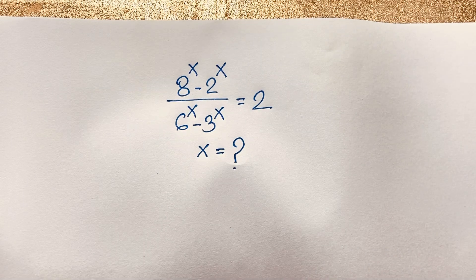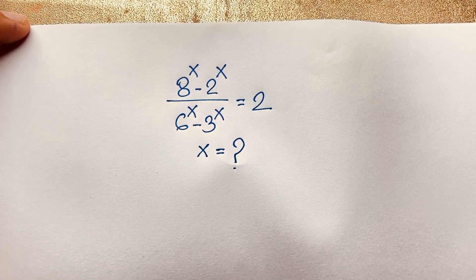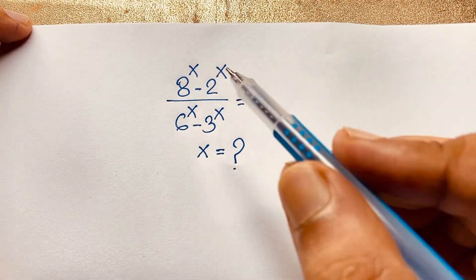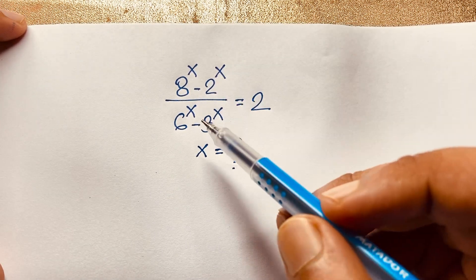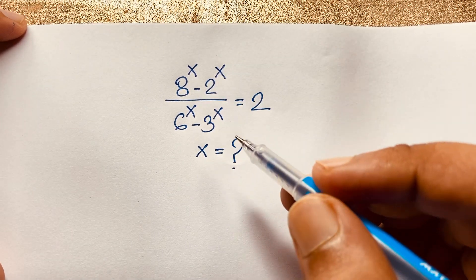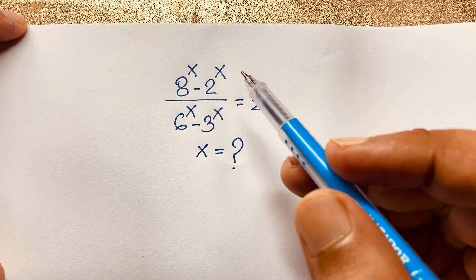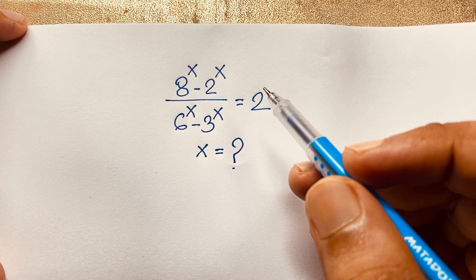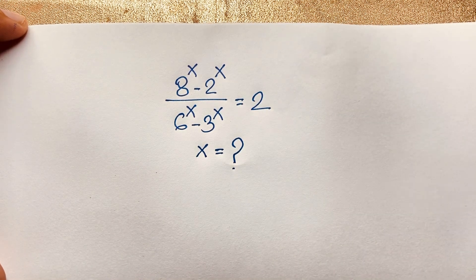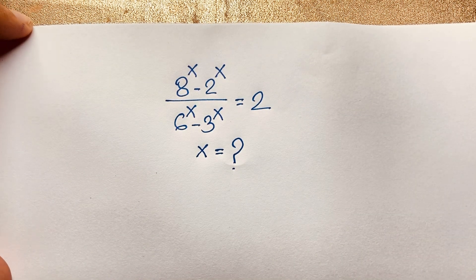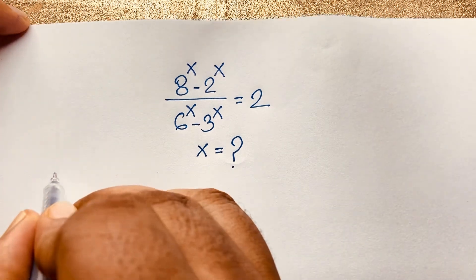Hello everyone, welcome to Russia's Classroom. Today we are solving an interesting math scenario question, which is: 8 to the power of x minus 2 to the power of x, over 6 to the power of x minus 3 to the power of x, is equal to 2. How to solve this interesting math problem?